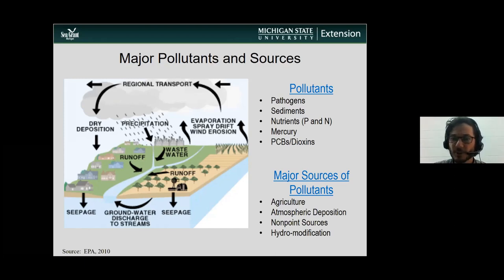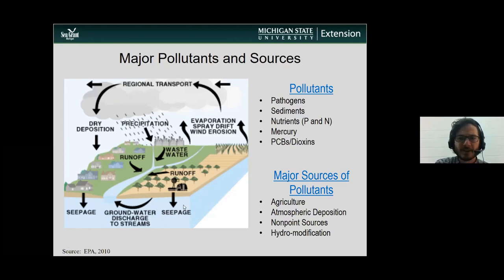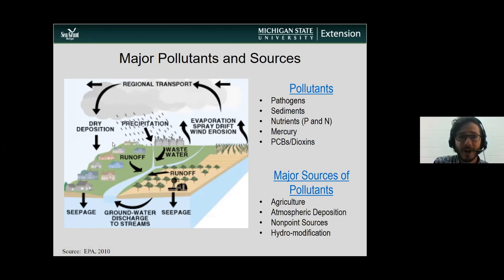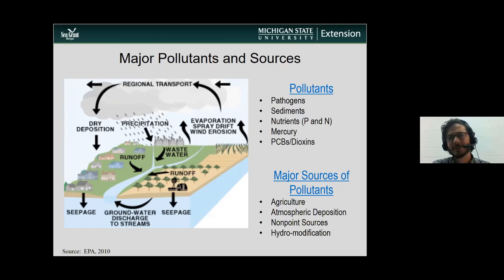Some of the major sources are agriculture, non-point sources, atmospheric deposition, and hydro modification like channelization and habitat modification. For atmospheric deposition, I'll link it with mercury: when we burn coal, mercury is released into the atmosphere. It either falls onto the ground by dry deposition or through precipitation. Once there, it can leach into our water bodies. Once in the water bodies, it gets into the food chain, into the fish we eat, and biomagnifies into us.